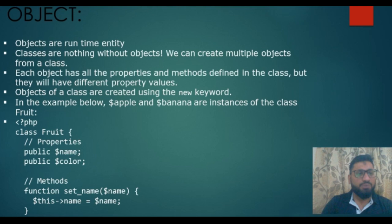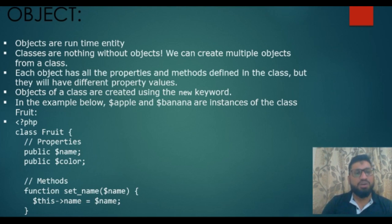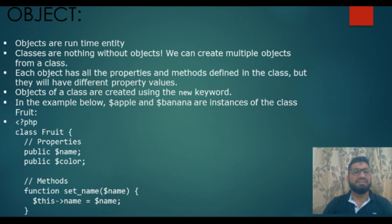After that, we have objects. Objects are runtime entities. Classes are nothing without objects. We can create multiple objects from a class. Each object has the properties and methods defined in the class, but they will have different property values. Objects of a class are created by using the 'new' keyword.